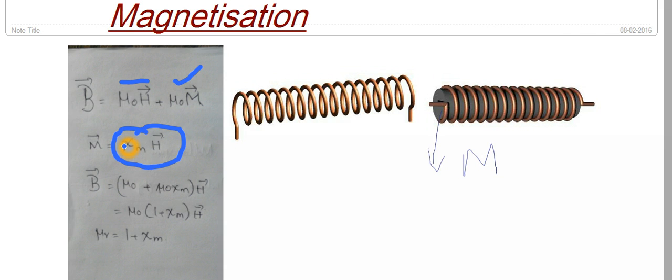If χM value is more, it is easily magnetized. So for good magnetic materials, χM value will be positive. So always B will be more.